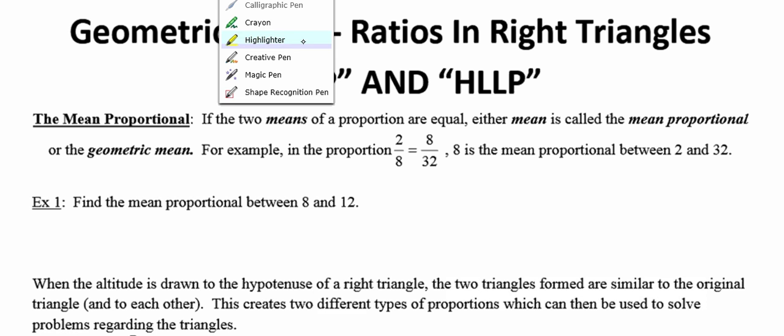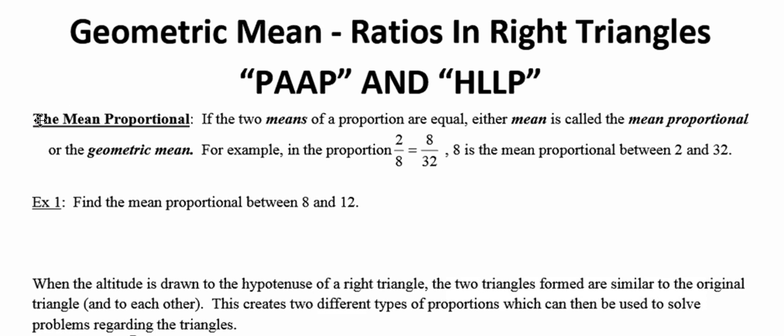So what is the mean proportional? Well, the mean proportional has to do, of course, with proportions, and in particular, the mean spot in the proportion. It says that when the two means of a proportion are equal, either one of those means is called the mean proportional, sometimes called the geometric mean.